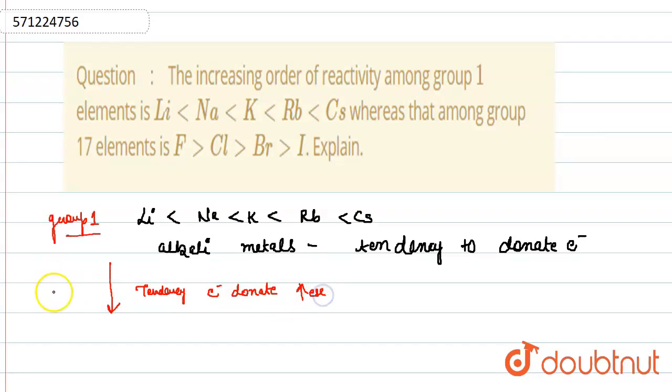Why? Because as we move down the group, atomic size increases and due to increase in the atomic size, their force of attraction with the nucleus is very much less. So, their ability to donate electron increases as we move down the group. That's why we can say that reactivity also increases when we move down the group.